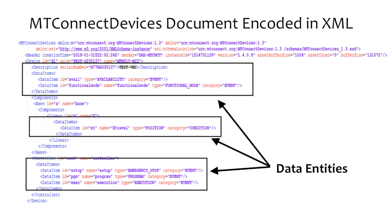Each piece of data can be characterized based upon a type and, when applicable, a subtype. Types include terms like temperature, pressure, controller mode, and execution state. Subtypes can further differentiate between similar but different pieces of data — for example, an actual position versus a programmed position. Additional information can be defined to enhance the meaning of values provided for data entities, including standard units where applicable, and definition of any preprocessing applied to the data, like determining an average value or maximum value for a series of data samples. The information model defines many other terms that may be used to define a piece of data.